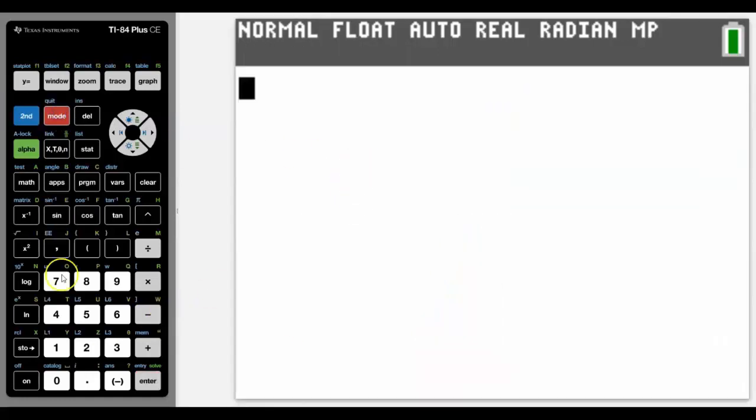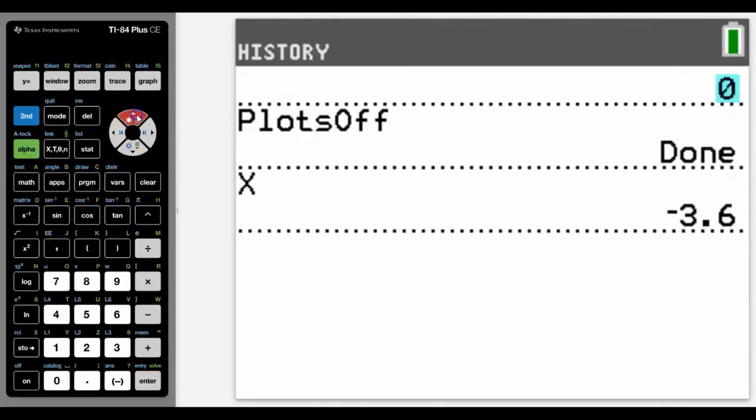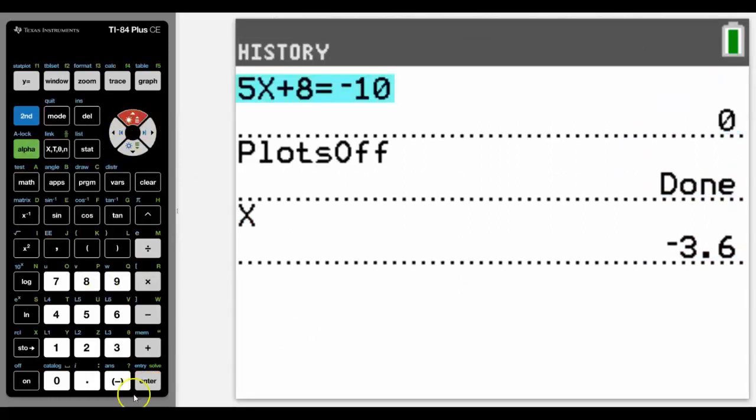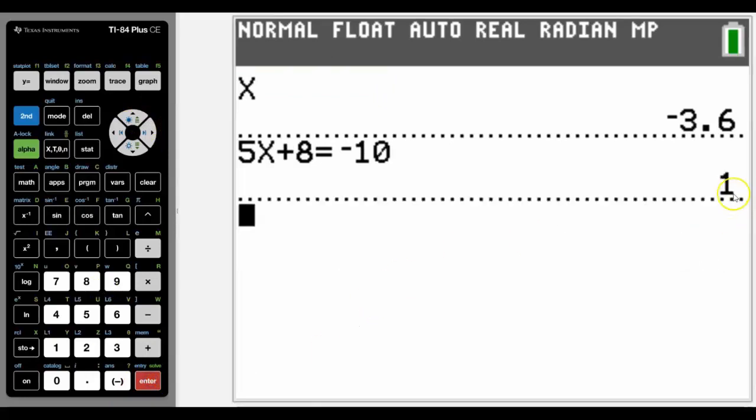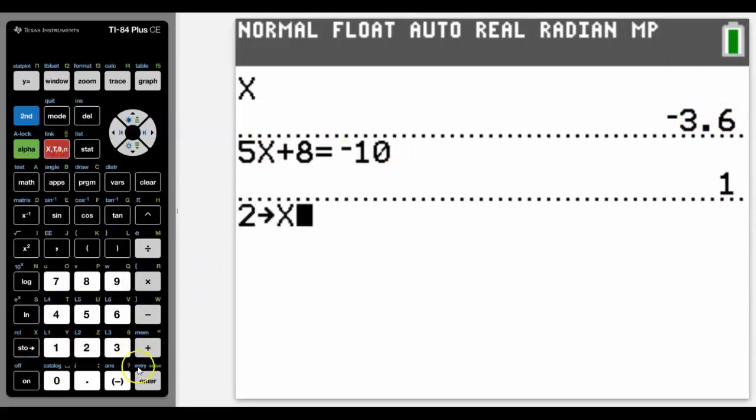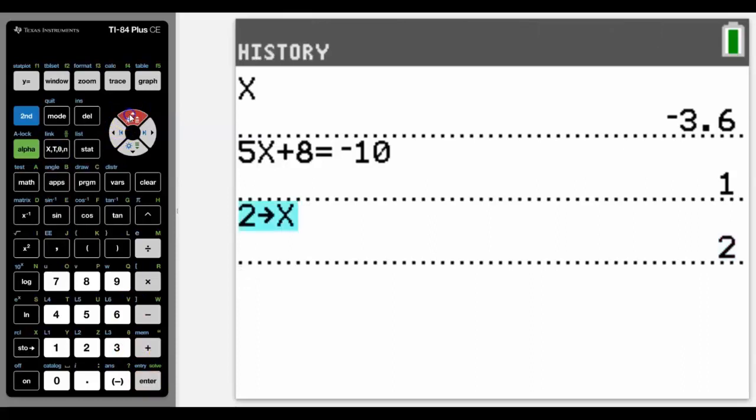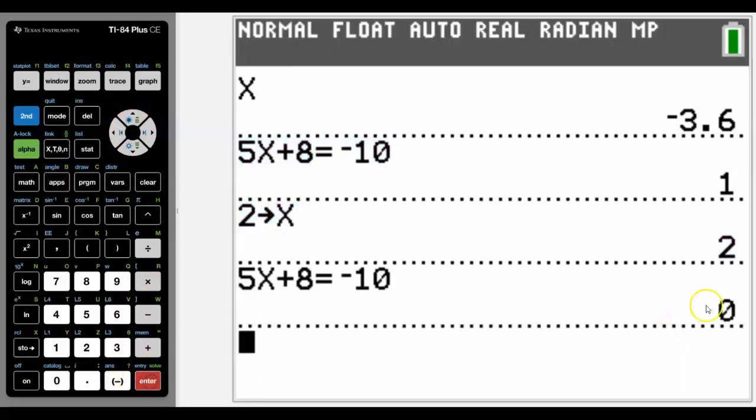Notice that the calculator now stores that value as negative 3.6, and if I go up and copy that equation again, it will now give me the answer of one, which means it's true that when x is negative 3.6 it's true. When I had a number before, I actually had x stored as 2—if I go up and copy that, it will say that it is false; it will give me a 0. So basically working binary.